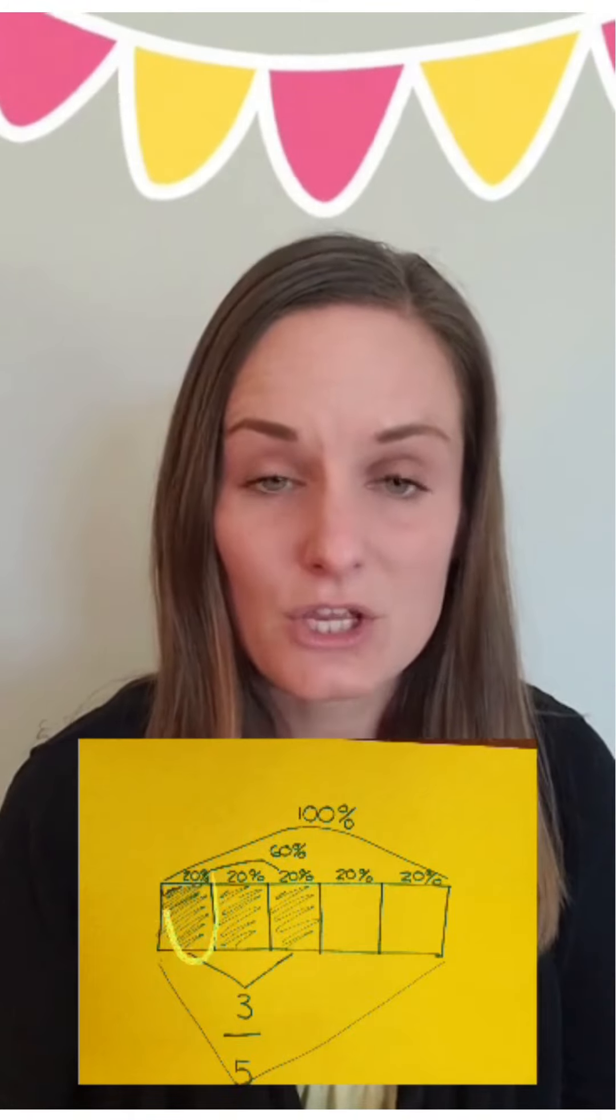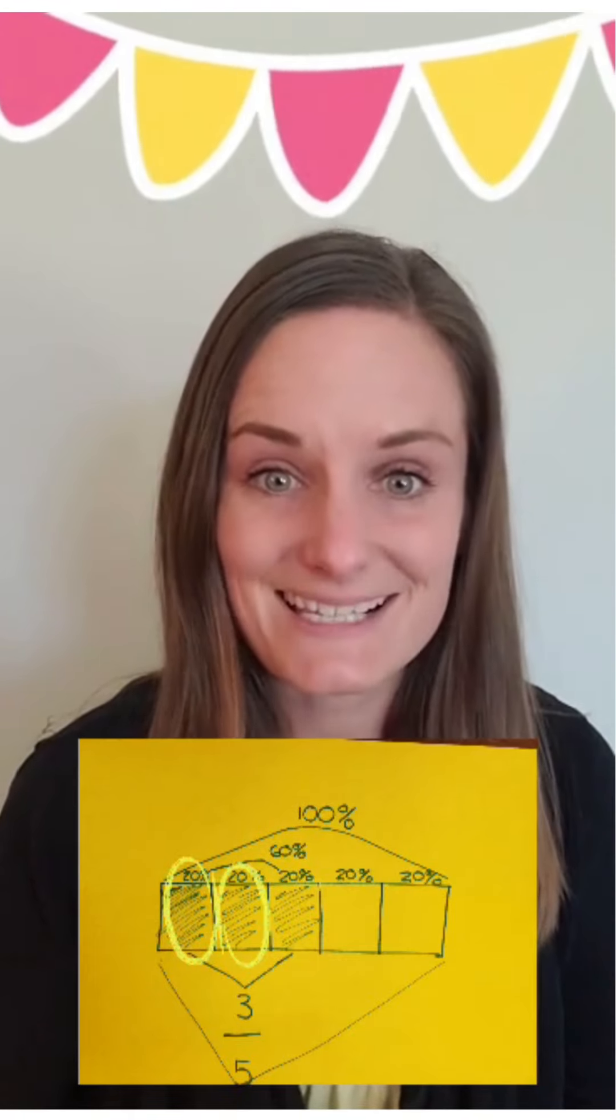What is 100 divided by 5? Twenty. So each part would be 20%. If I have three parts: 20, 40, 60. Three-fifths equals 60 percent.